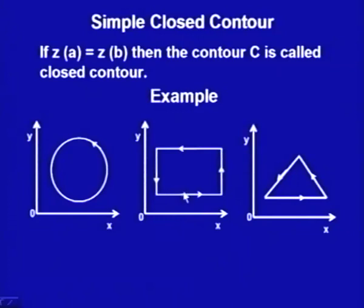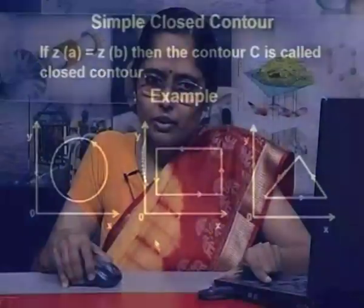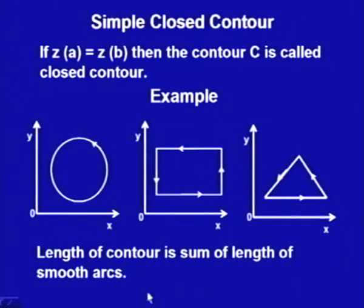From this we see that for a contour, z'(t) is piecewise continuous and not zero at any point. This means z'(t) is integrable over the whole range from t = a to t = b. So the length of a contour can also be found. Since a contour is the join of smooth arcs which are differentiable, the length of a contour — if it is a single piece — is simply the integral of |z'(t)| from a to b. If it is a join of many smooth arcs, it is the sum of the lengths of those arcs.